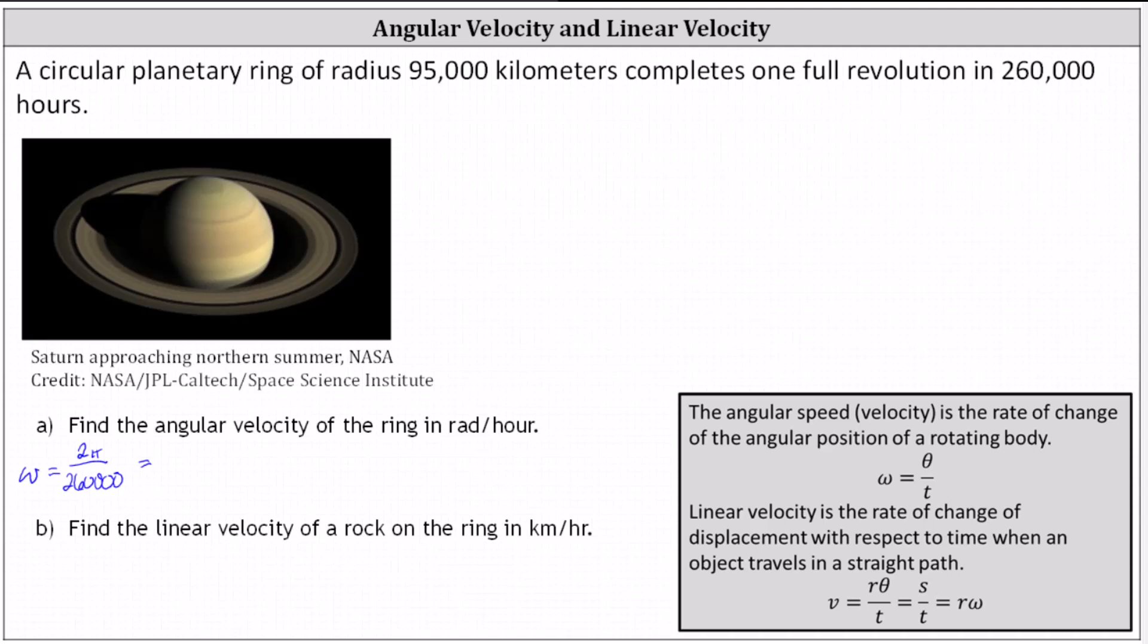Simplifying by a common factor of two between two and 260,000, the simplified angular velocity is pi divided by 130,000 radians per hour. For the decimal approximation in scientific notation, we have approximately 2.417 times 10 to the power of negative five radians per hour.